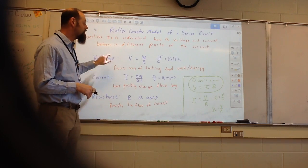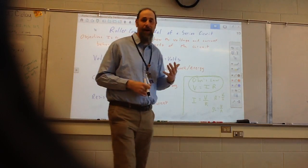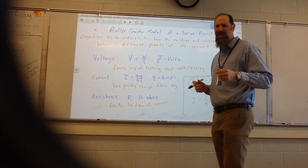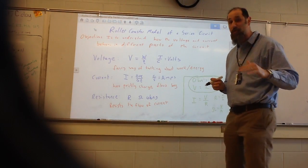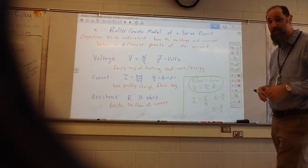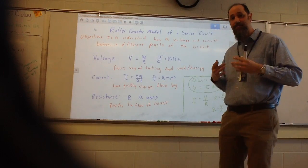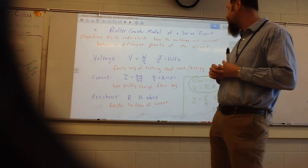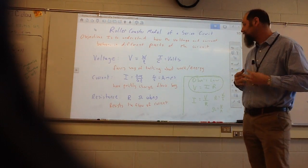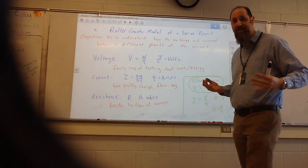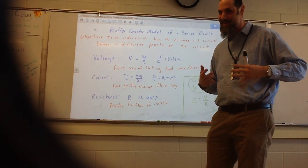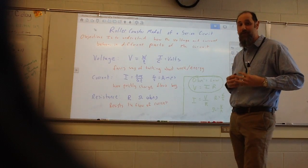So just a reminder, voltage is that fancy way we talk about work or energy, but it sounds like a unit price, joules per coulomb, but we call it putting units of volts. And current talks about how quickly charge flows by, hence coulombs per second or amps. And then resistance, if you recall, is what resists the current, makes it more difficult for it to flow.